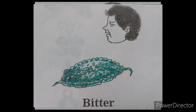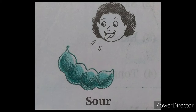Third one is sour. S-O-U-R. We can say ambat in Marathi. Tamarind is an example of sour taste. Observe the picture carefully.